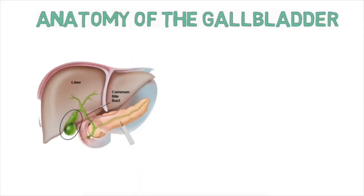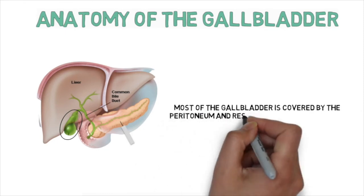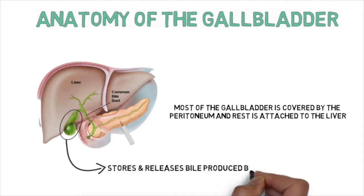The gallbladder is a thin-walled contractile sac-like organ situated underneath the liver where the right and left lobes divide. The majority of the gallbladder is covered by the peritoneum and the rest is attached to the liver. The more surface area attached to the liver, the stronger the anchor, which can be problematic during laparoscopic cholecystectomy as the gallbladder may be so adhered that it makes removal difficult, sometimes requiring conversion to open surgery. The function of the gallbladder is to store and release bile, which is produced by the liver.